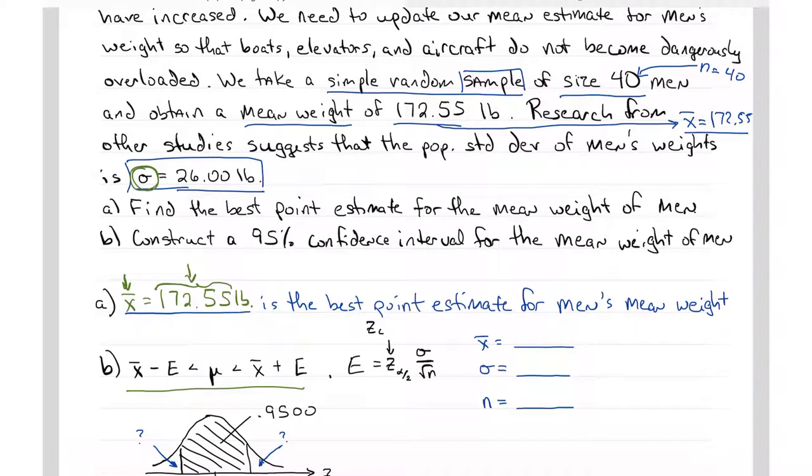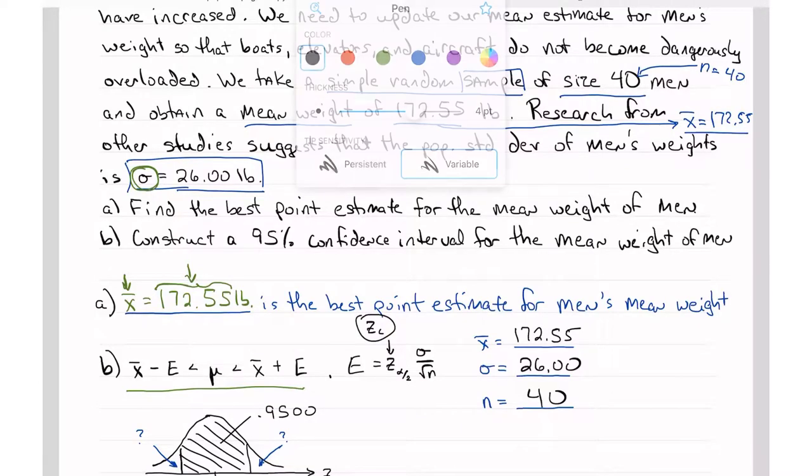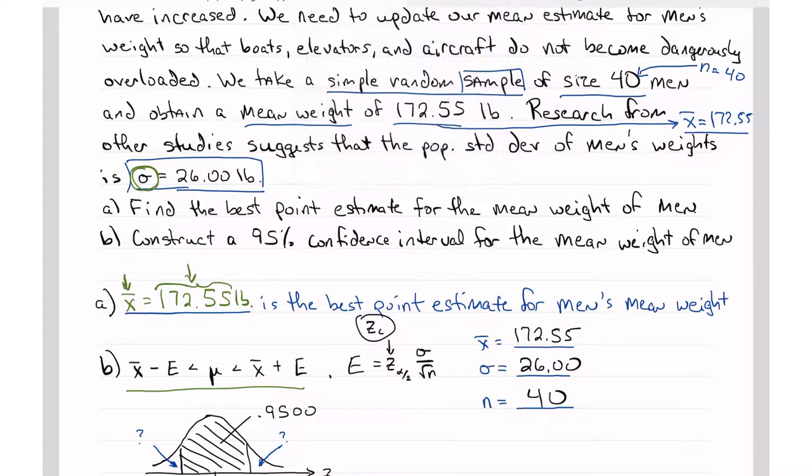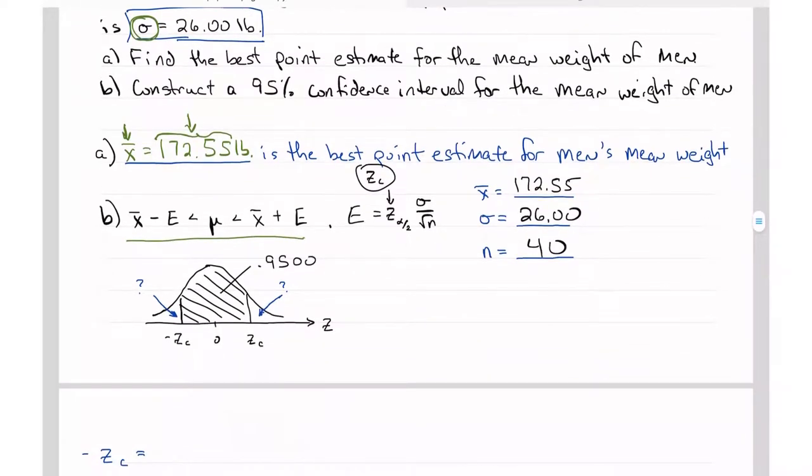So x̄ we found out was 172.55, σ is 26, and n is 40. We need to find this value, Z sub C. Here we have, and we've said that we want, B says, construct a 95% confidence interval for the mean weight of men. Mean is μ. We're estimating the population mean.